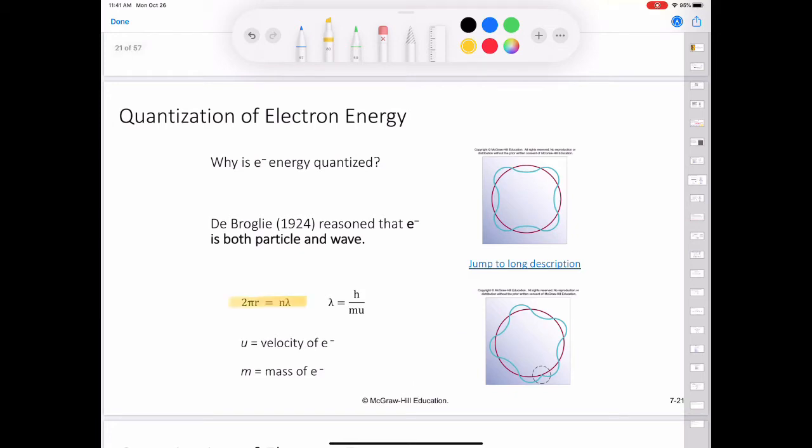The relationship between the circumference of an allowed orbit, 2πr, and the wavelength, λ, is given by this expression. Where r is the radius of the orbit, λ is the wavelength of the electron wave and n is equal to 1, 2, 3, and so on.